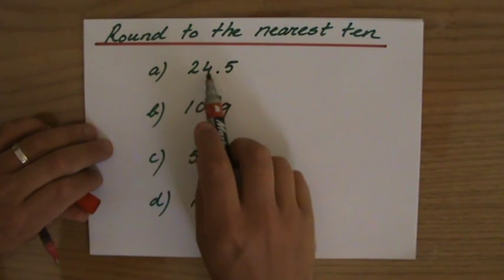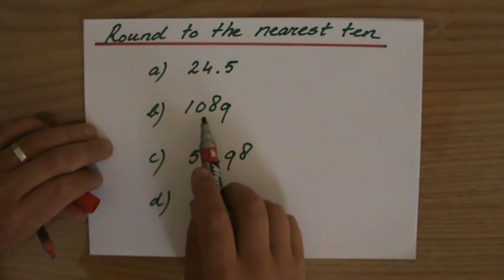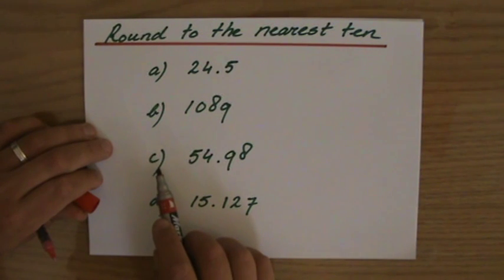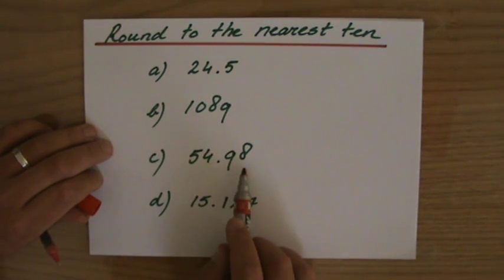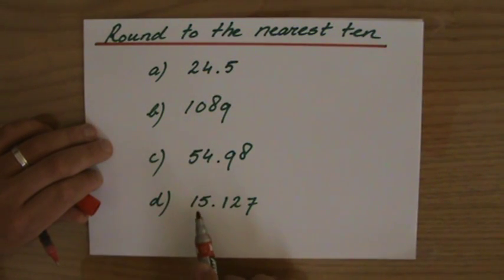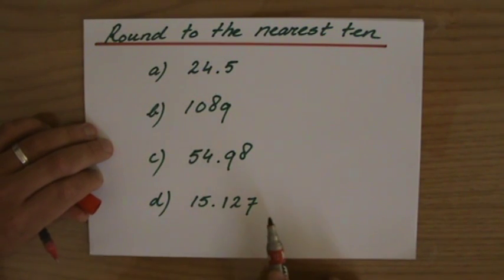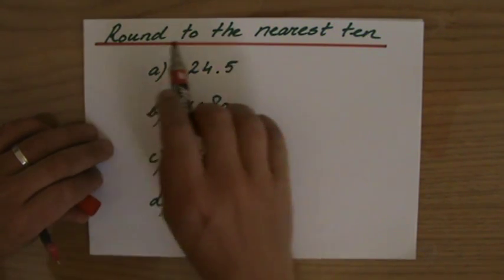The first question 24.5, the second question 1089, question C 54.98, and question D 15.127. Okay, and we have to round to the nearest ten.